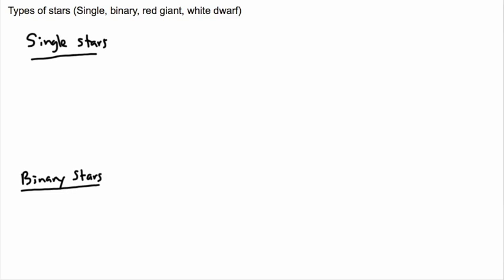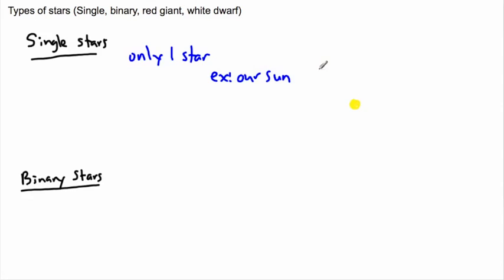Single stars are just that — only one star. An example would be our Sun. For our Sun, all we have is just our Sun with the planets around it, and that's it. That's a bit boring, so let's take a look at binary stars.